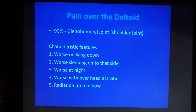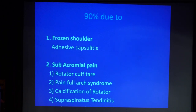In summary for the neck: pain in the scapular region and back of the shoulder is almost 80% due to the cervical spine. Very rarely, you get tumors or infection. The next thing — pain over the deltoid. If a patient complains of pain over the deltoid, you are 90% sure this patient's pain is coming from the shoulder joint. There is no doubt: it is coming from the glenohumeral joint.